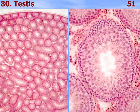Between the seminiferous tubules there is interstitial tissue with endocrine Leydig cells, which produce the male sex hormone testosterone. You can also find numerous blood vessels here.